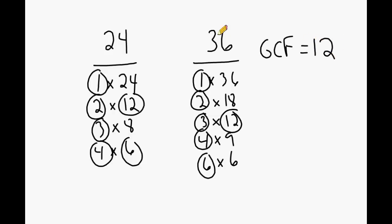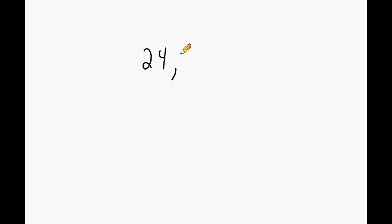This is one way to find the GCF of two numbers: make a factor list, identify all common factors, and figure out which is the greatest. However, I'm going to show a different method for finding the GCF. I'm going to write the numbers 24 and 36 side by side, separated by a comma, and then draw an upside-down bracket — it looks like a divide-by symbol but upside down.